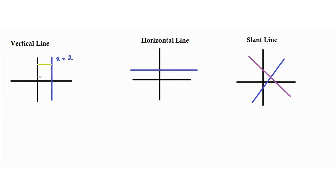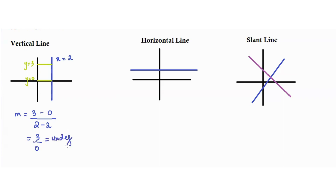So the gradient is 3 minus 0 over 2 minus 2. We use 2 minus 2 in the denominator because for both y values the x value remains the same — only y is changing. The denominator is 0, and whenever the denominator is 0, the value is undefined. So the gradient of a vertical line is always undefined.